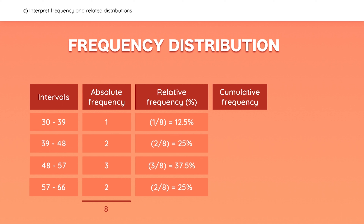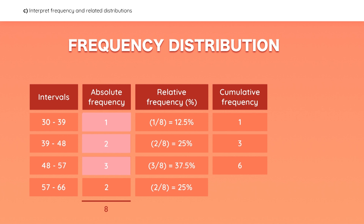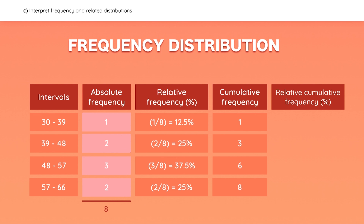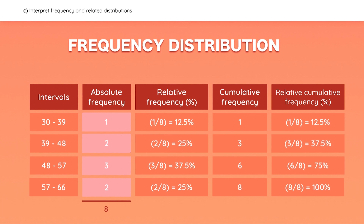For the cumulative frequency, the first interval has one observation. For the second interval, you must include the observations that fall within that interval as well as the observations in previous intervals — so there are a total of three. For the next interval, you add up all the observations on that interval and the ones that came before it, for a total of six. The last interval will include all eight observations because you're accumulating them. Notice that cumulative frequency can be written in relative terms as well, and the last item, which includes all observations, has a value of 100%.